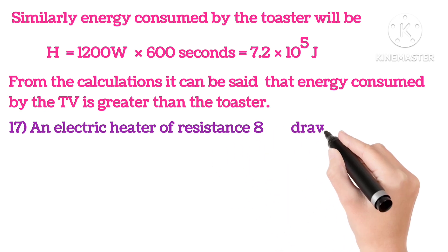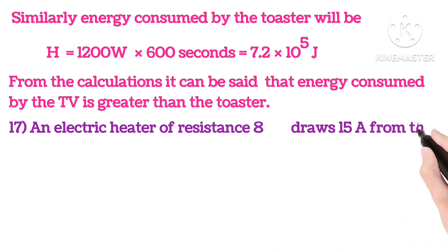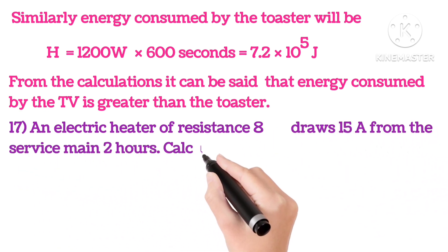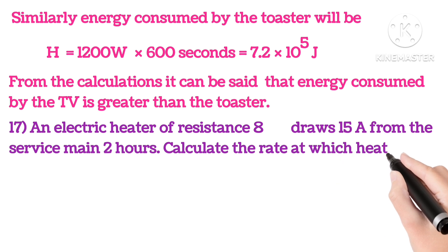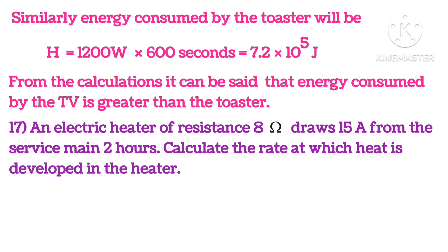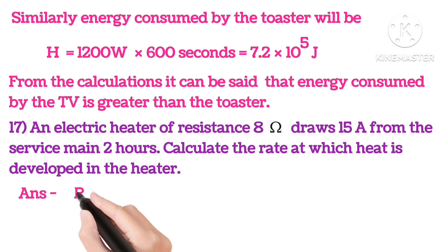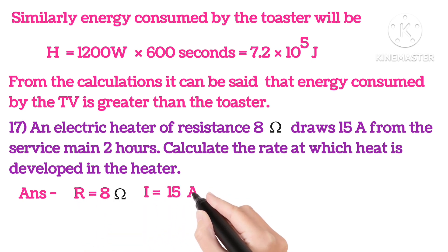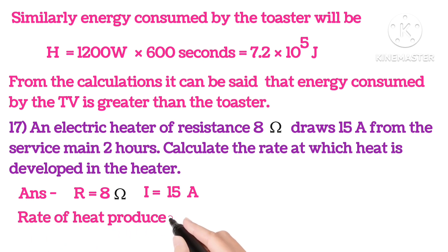17th: an electric heater of resistance 8 ohms draws 15 amperes current from the service main for 2 hours. Calculate the rate at which the heat is developed in the heater. Answer is: we know the resistance is 8 ohms and the current is 15 amperes.